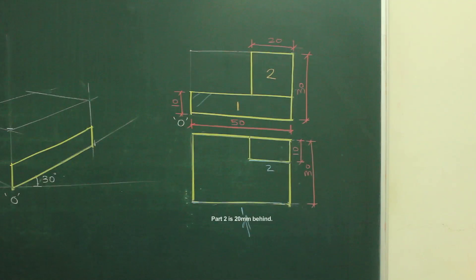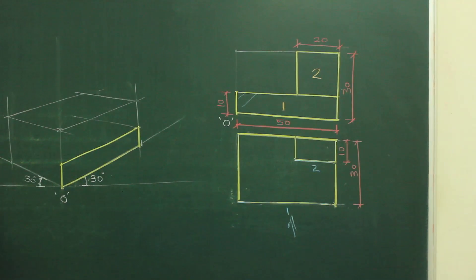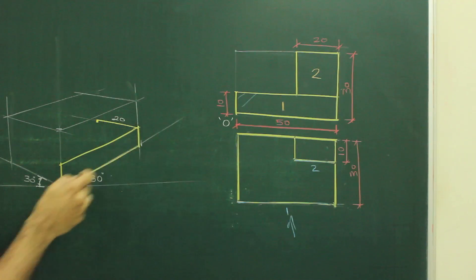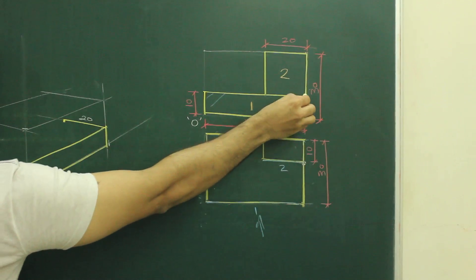So go behind by 20. From here you go behind by 20 to reach to this point. If you see the main diagram, this point, in front view this point.